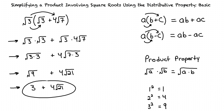In summary, when we're multiplying square root terms together, we first multiply the terms using the distributive property. Then we combine the terms using the square root product property. Next, we look to simplify the terms if we can factor the radicand into two factors — one being a perfect square and the other a whole number. Finally, we simplify the square root of any perfect squares.